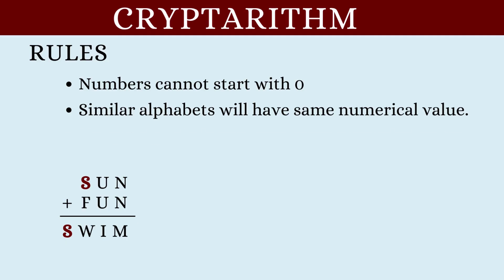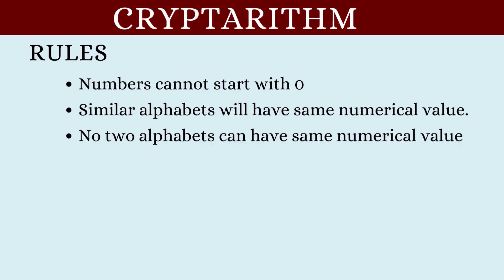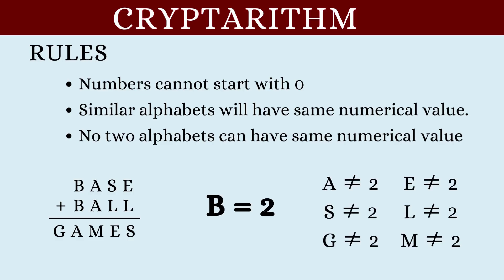Third condition. No two alphabets will have the same numerical value. For example, let's say in this cryptarithm, B has a value of 2. This means that none of the other alphabets can take a value of 2.